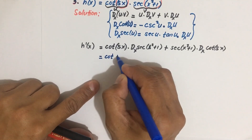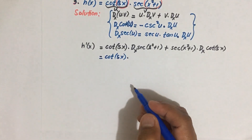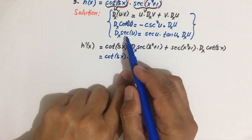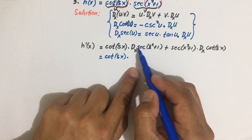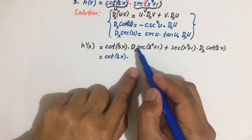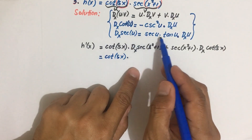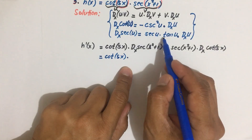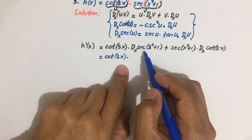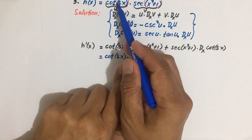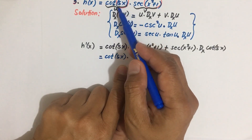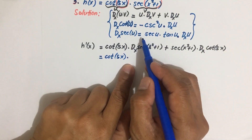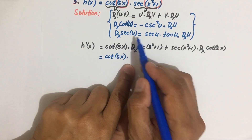Now let us apply the secant derivative formula to the first term. The derivative of secant u equals secant u times tangent u times the derivative of u with respect to x. Here, our u is x squared plus 1. So the derivative of secant of (x squared plus 1) becomes secant of (x squared plus 1) times tangent of (x squared plus 1) times the derivative of (x squared plus 1) with respect to x.